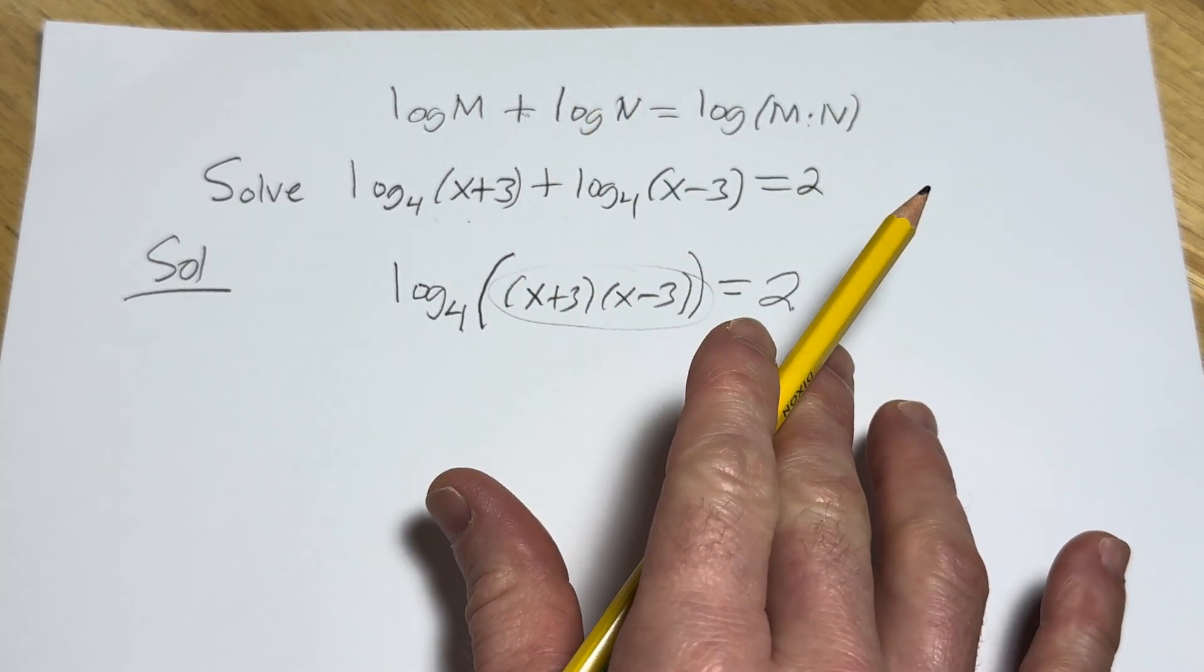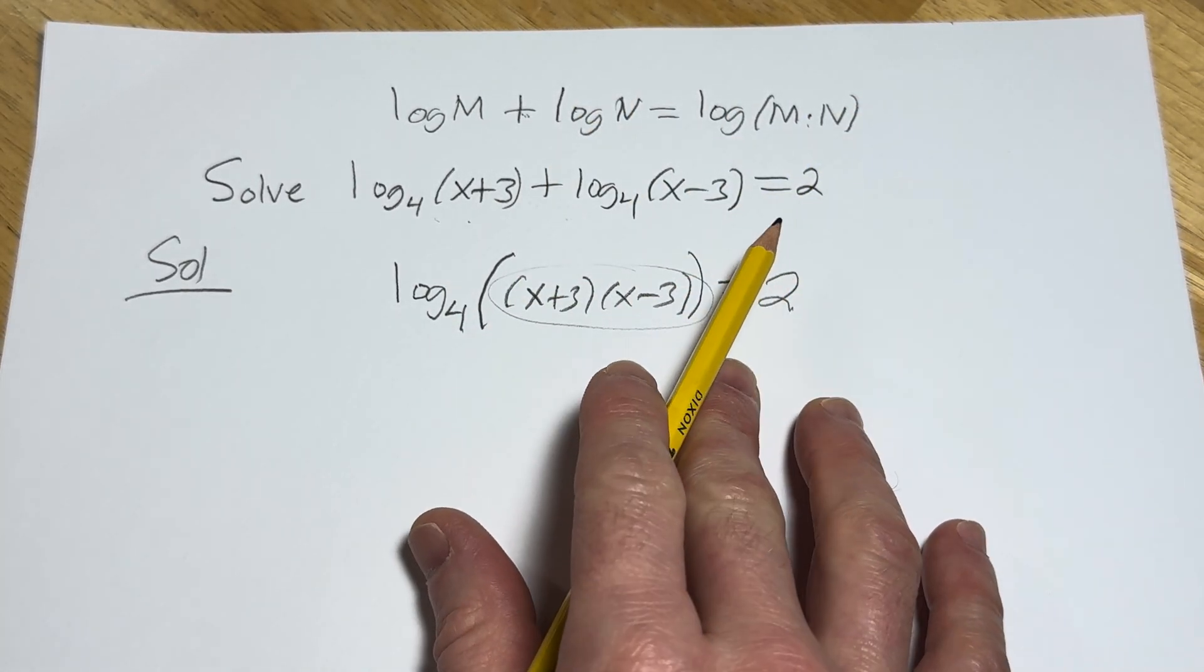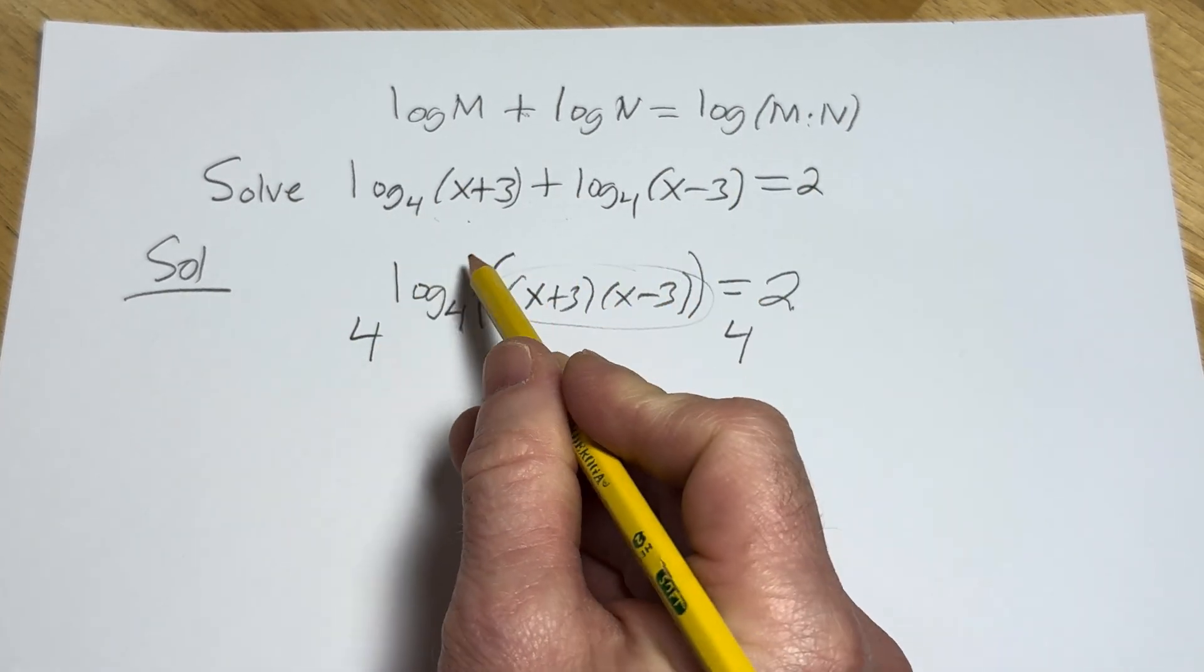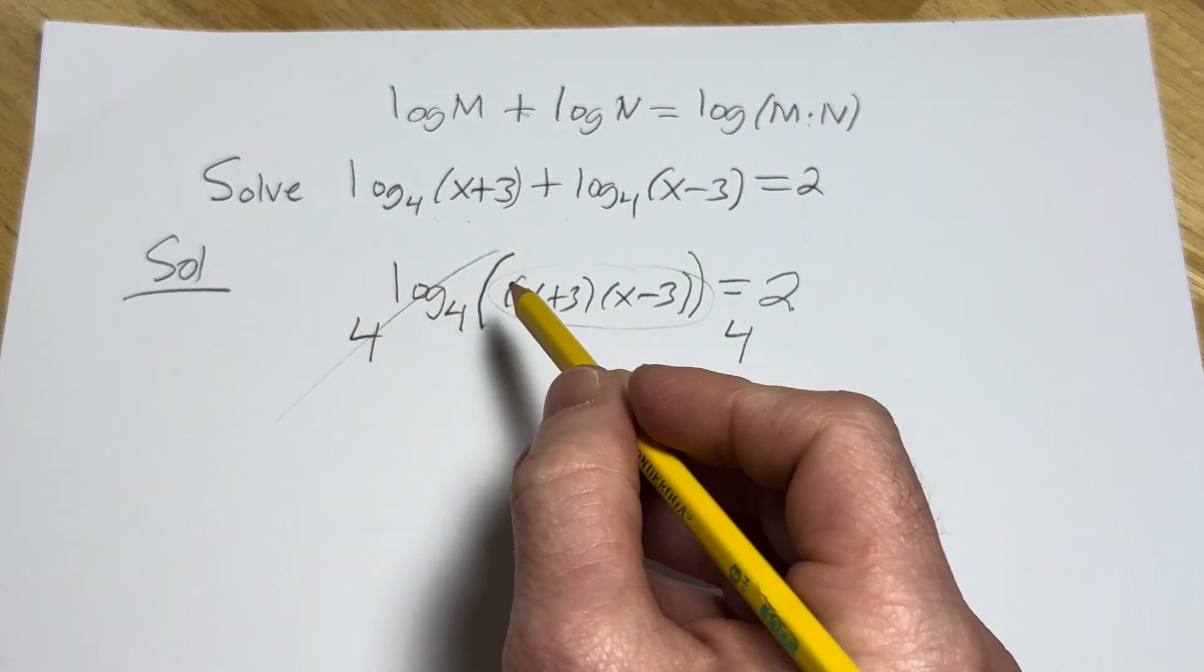You can say 4 squared is equal to all of this, or you can exponentiate both sides. I'm going to go ahead and exponentiate both sides because I feel like that's easier for people to understand. So what you do is you put a 4 here, and you put a 4 here, and these basically go away. So you end up with this,